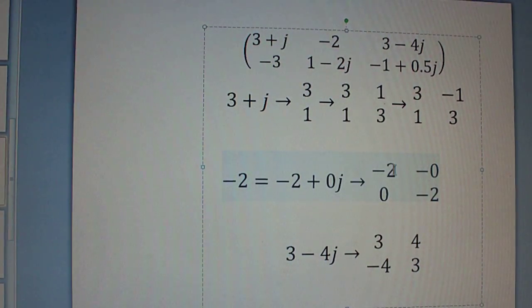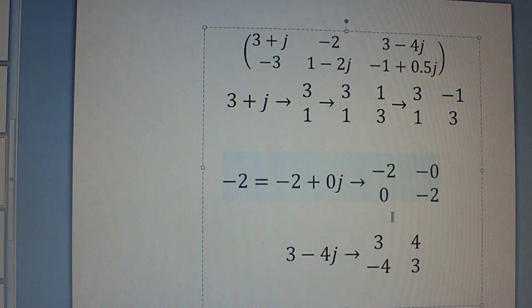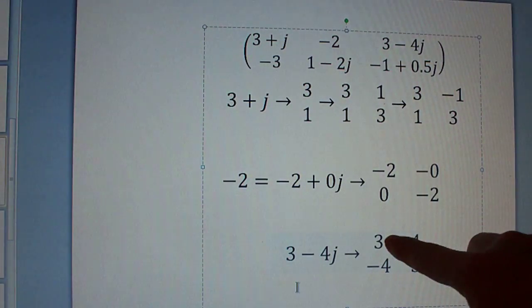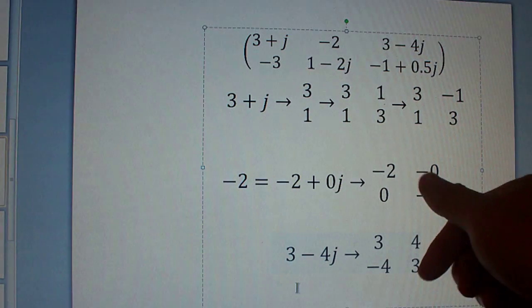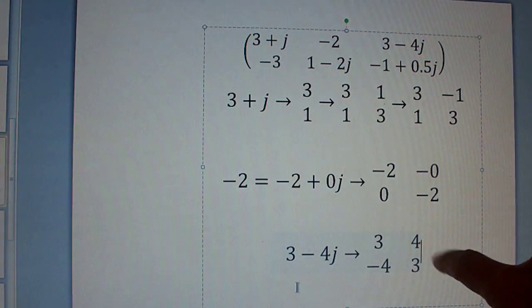And therefore, you put negative 2 and 0. And then again, you flip and negate the top. Here, we also have 3 minus 4j. What do you do? You put 3 and negative 4, flip and negate the top. So if you negate the negative 4, you get positive 4.